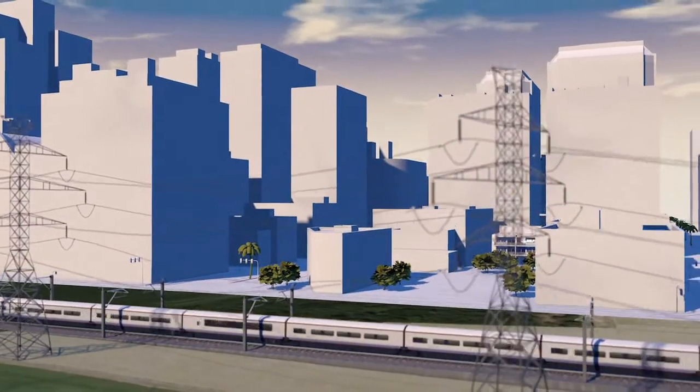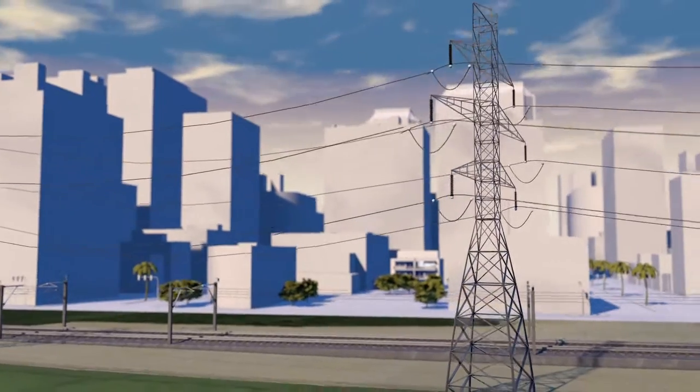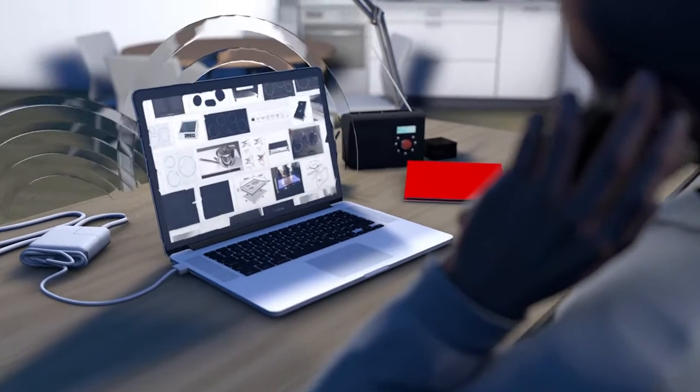Waves emitted by power lines, railway tracks and domestic electrical appliances are low-frequency. Screens and induction plates generate higher-frequency waves.